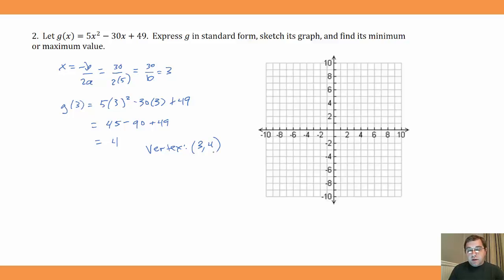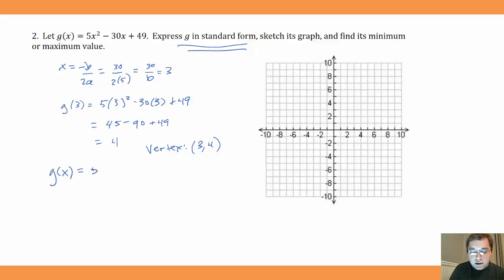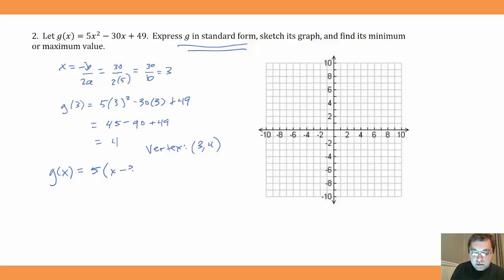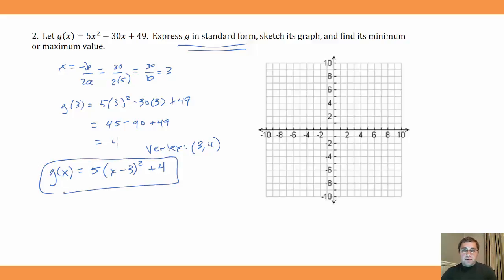Once we have the vertex, we can write the function in standard form as requested. g(x) = 5(x - 3)² + 4, using the same a value of 5 and the vertex (h, k) = (3, 4). That's our function in standard form. Let's graph this, starting with the vertex at (3, 4).